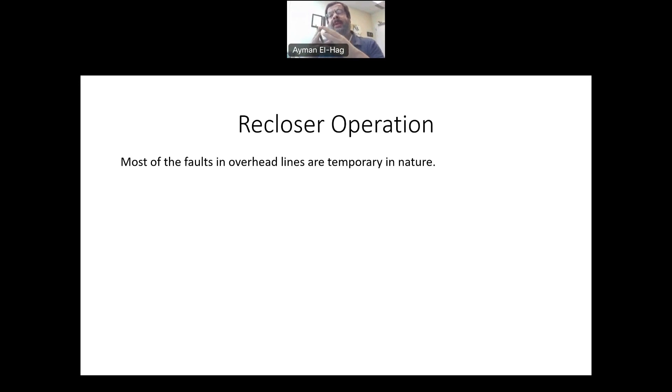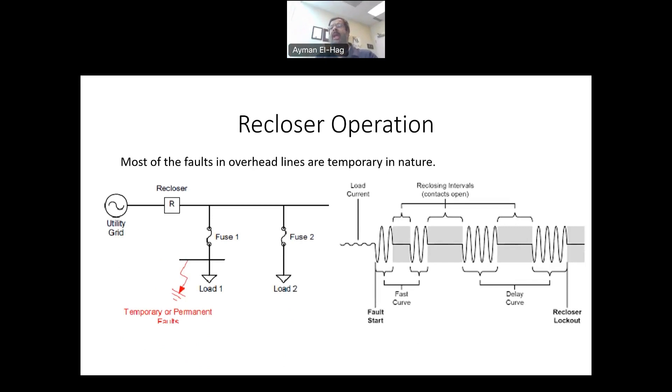But there is something also very important to understand, which is how to coordinate the Recloser with another overcurrent protection, which is the cutout fuse. We talked about that before, and it's used to protect transformers against overload or against a fault as well. So let's see how the coordination is happening.